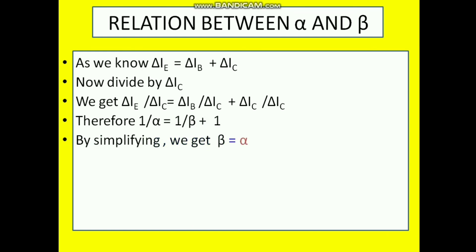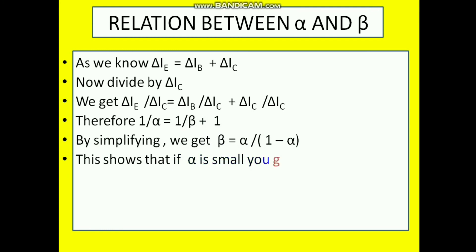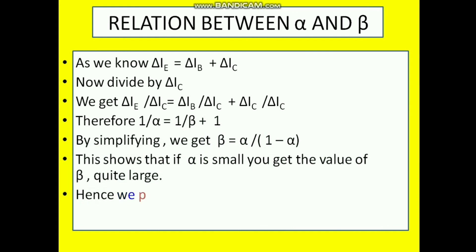From our last discussion it is quite clear that the value of alpha is quite low. When I substitute this small value of alpha into the above relation, I observe that for a small value of alpha, beta is quite large. This means the common emitter transistor is preferred over the common base transistor.